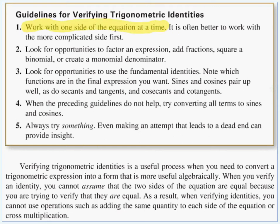You know, if we have an identity and in the middle is an equal sign, we're not going to add sine to both sides. We're not going to divide both sides by some number or trig function. We're going to work on one side at a time. And it says it's often better to work with the more complicated side to turn it into the simpler side of the equation. Look for opportunities to factor an expression, add the fractions, square a binomial, or create a monomial denominator.